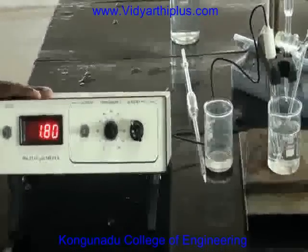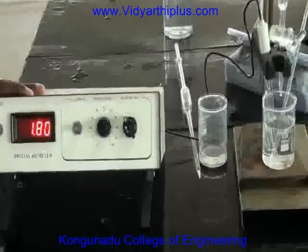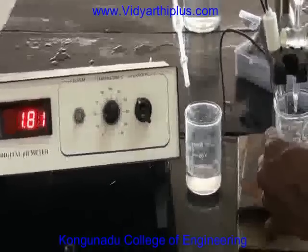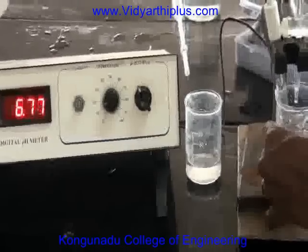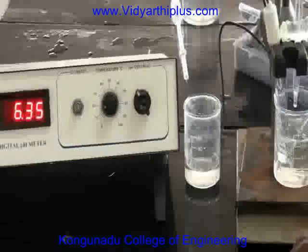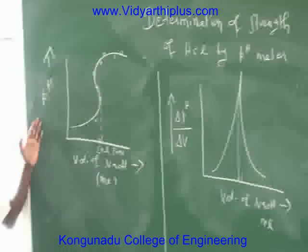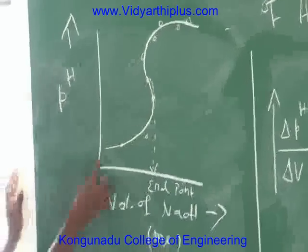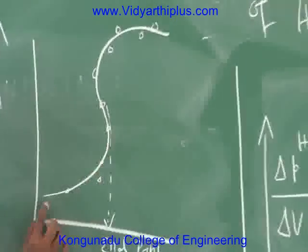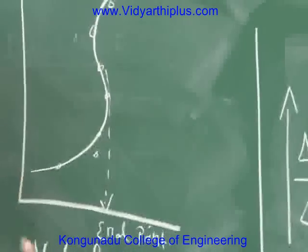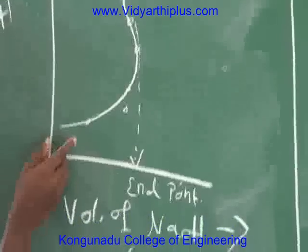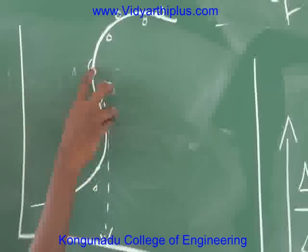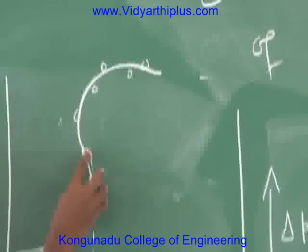We note the pH values until the second jump is observed. I have plotted the pH values by taking volume of NaOH on the x-axis and pH on the y-axis. The graph obtained is in the form of an S-curve. At a certain stage, the pH value suddenly increases, which indicates the end point.